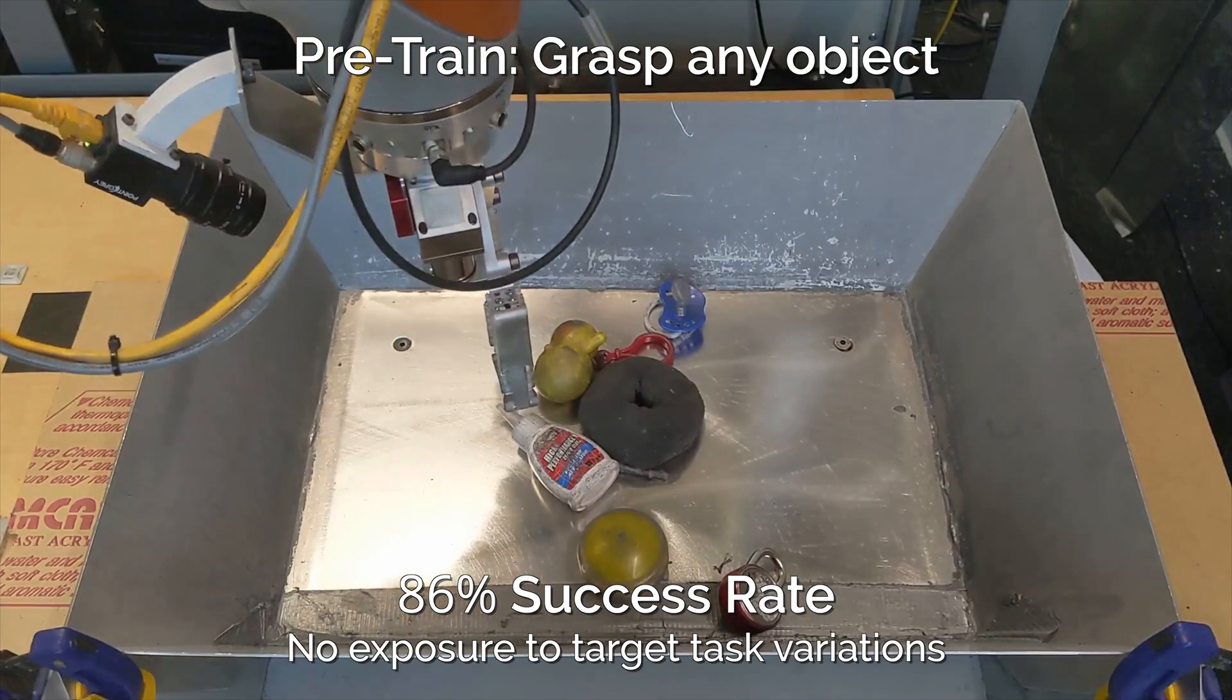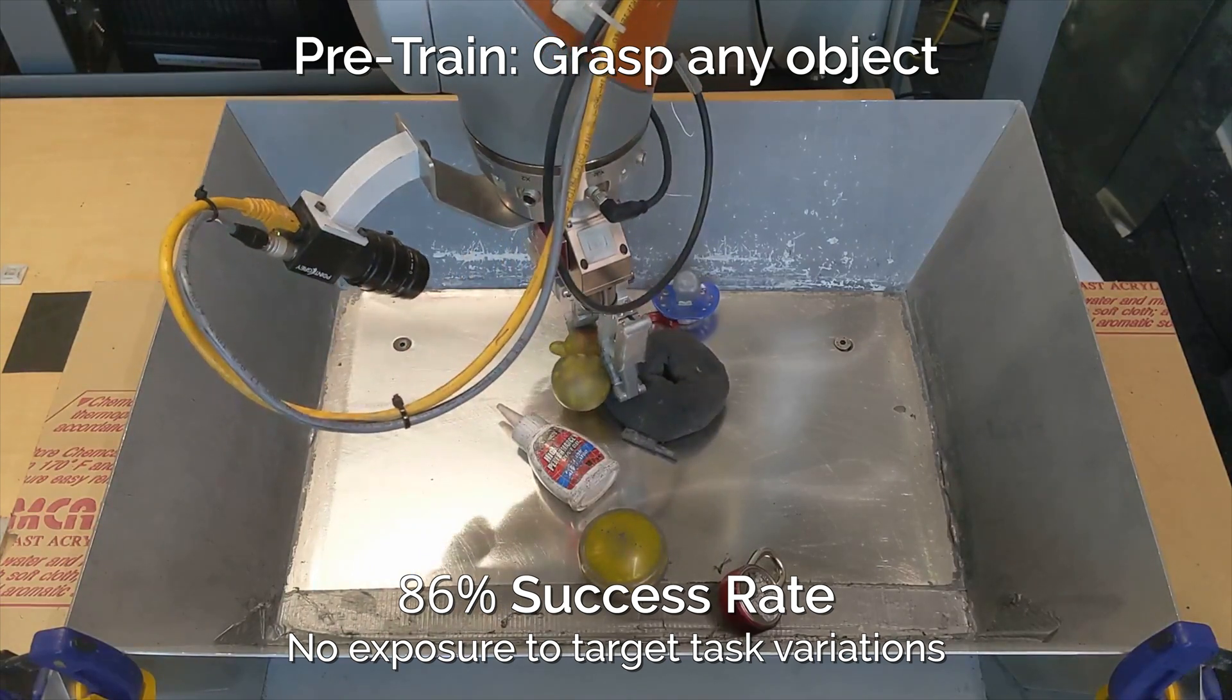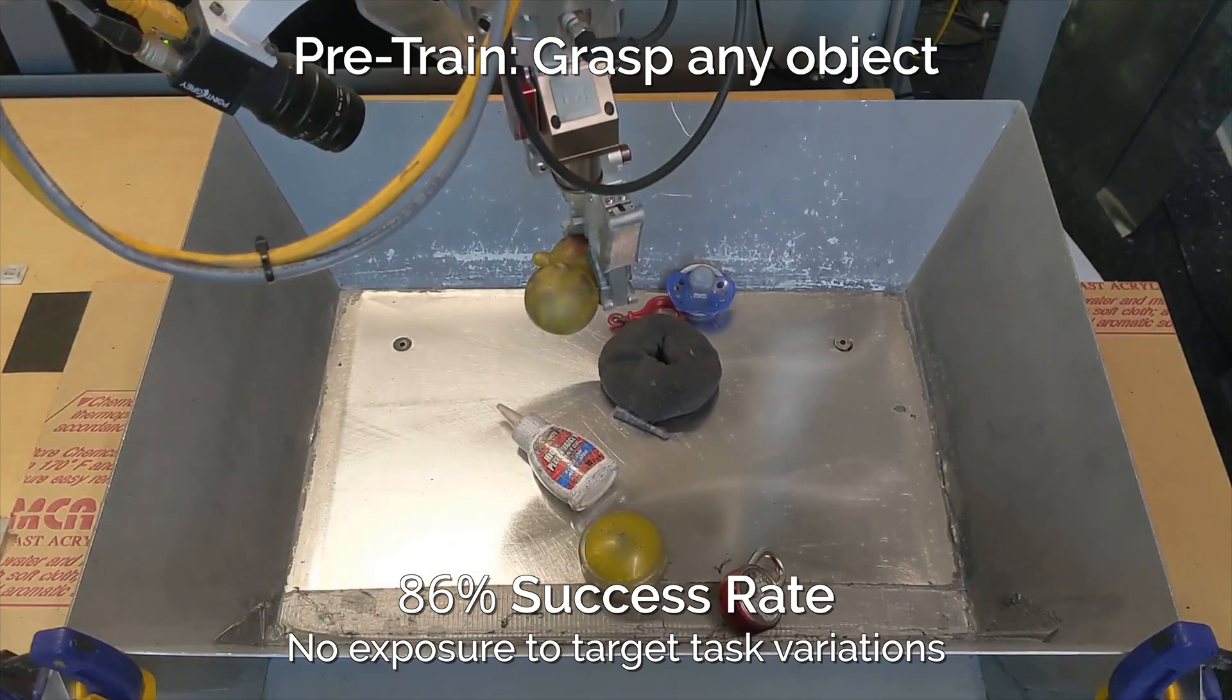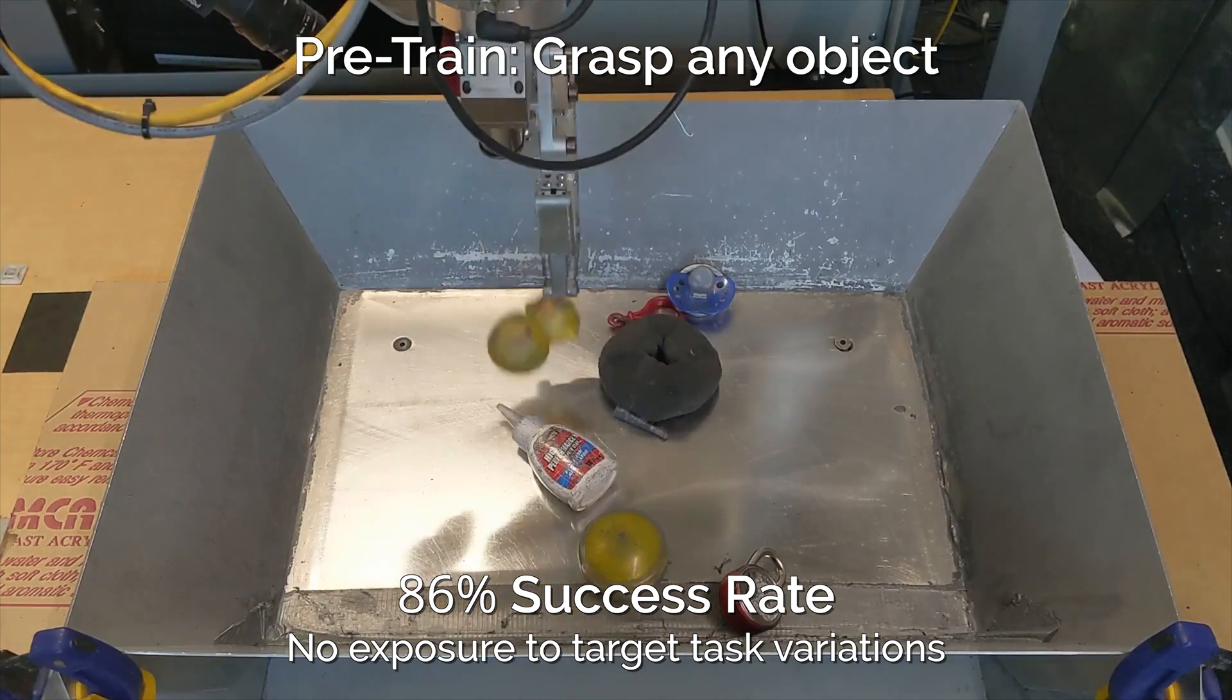Now let's see how it does on several other types of adaptation we study. Our pre-training task is indiscriminate grasping, in which we consider a trial successful if the robot grasps and raises any object. Each target task is a variation on this one, but under some modification to the objects, robot, or environment, which the system has never seen before.